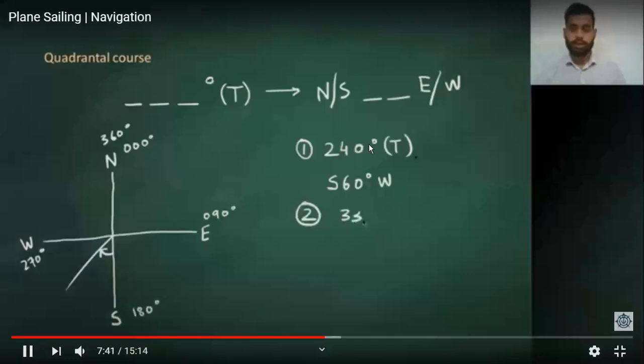You can see this example: 240 degrees is south 60 degrees west from 180.